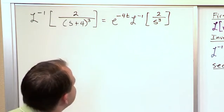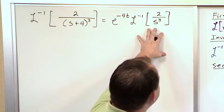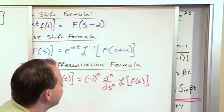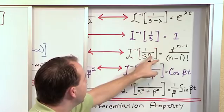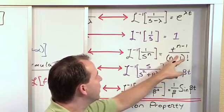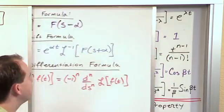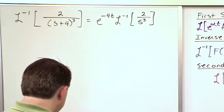The exponential comes out. Now you can see how this is useful. I know how to handle this. If I go back to my chart, I know how to handle it when I have 1 or a constant over s to the nth: t to the n minus 1 over n minus 1 factorial.